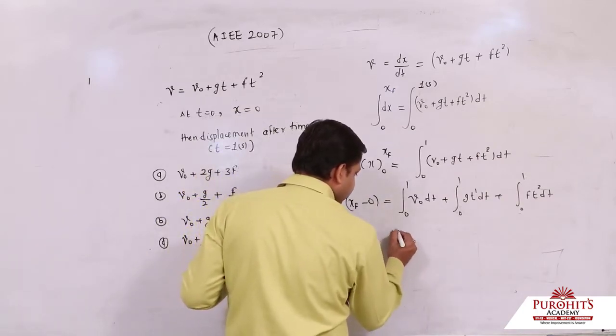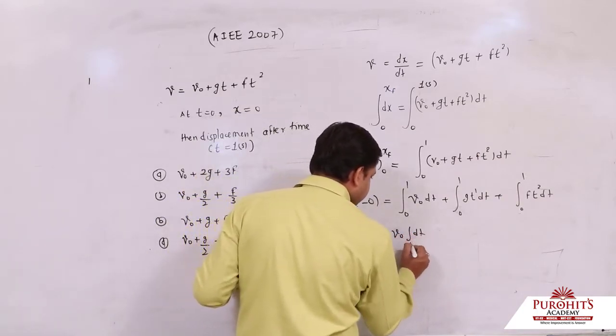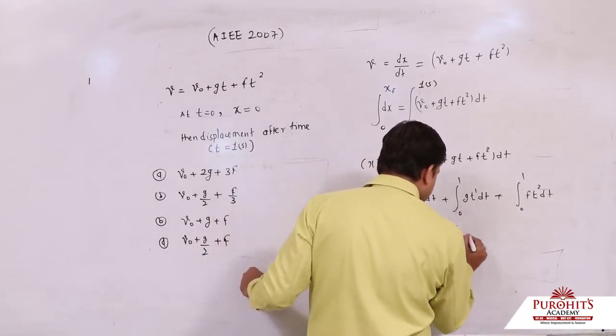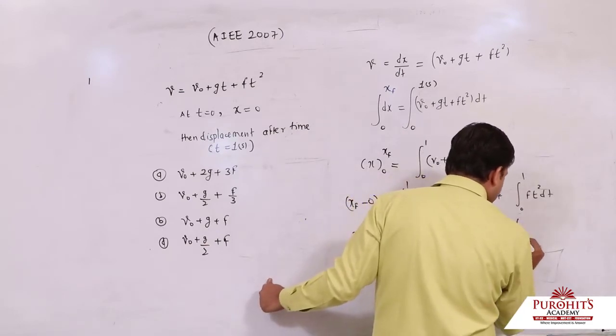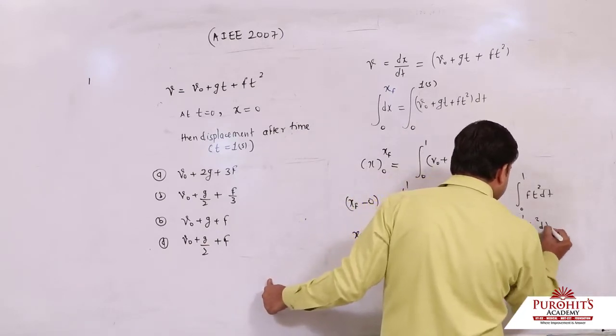xf finally, v0 integration dt from 0 to 1, g from 0 to 1 t to the power 1 dt, f from 0 to 1 t square dt - this can be written.